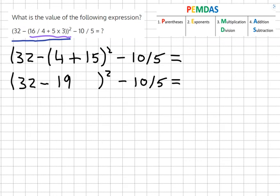And now we're going to finish up with the parentheses by doing 32 minus 19, which equals 13 squared, minus 10 over 5.